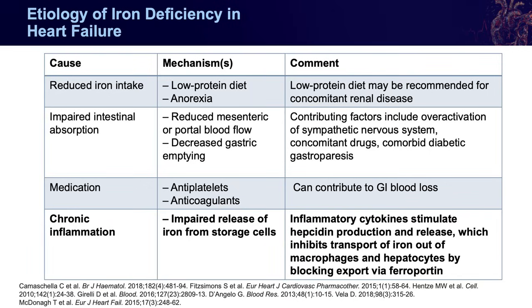In cardiorenal metabolic disorders, over-activation of the sympathetic nervous system may lead to decreased mesenteric or portal blood flow, and thus reduced GI absorption. Furthermore, patients might be concomitantly treated with medications that can induce slow bleeding, commonly in the GI tract.